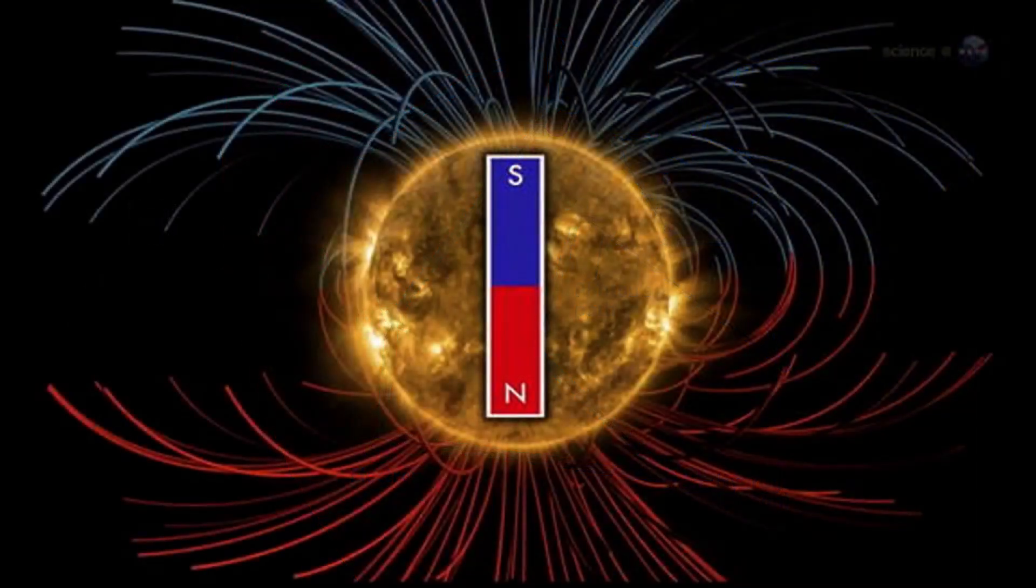The Sun's energy is produced by nuclear fusion in its core. The Sun's magnetic field creates sunspots, which can affect Earth's climate and technology.